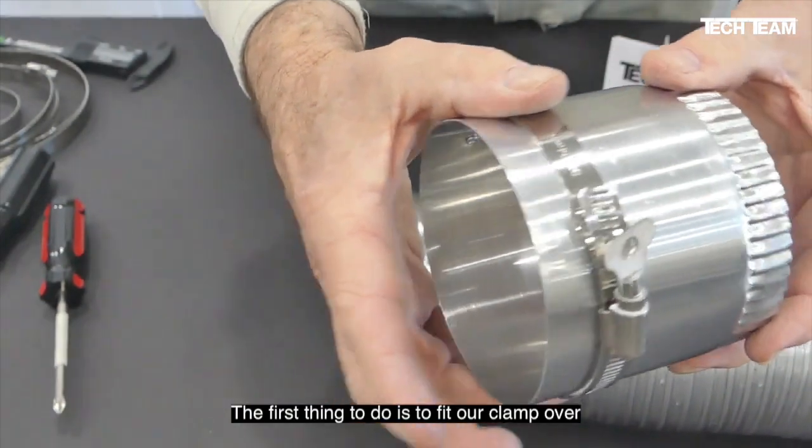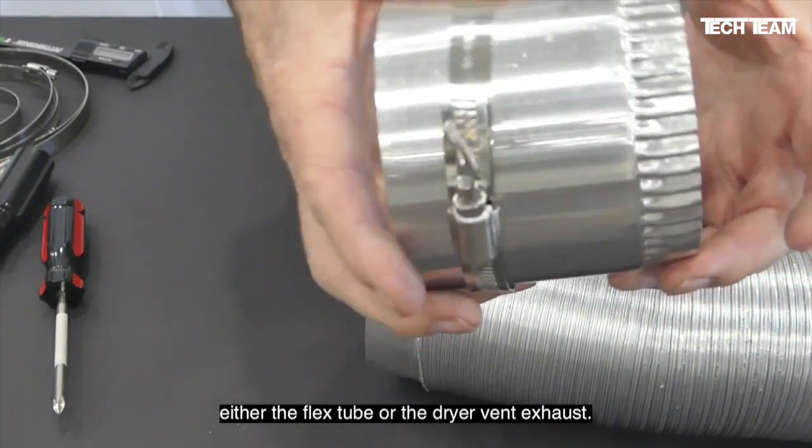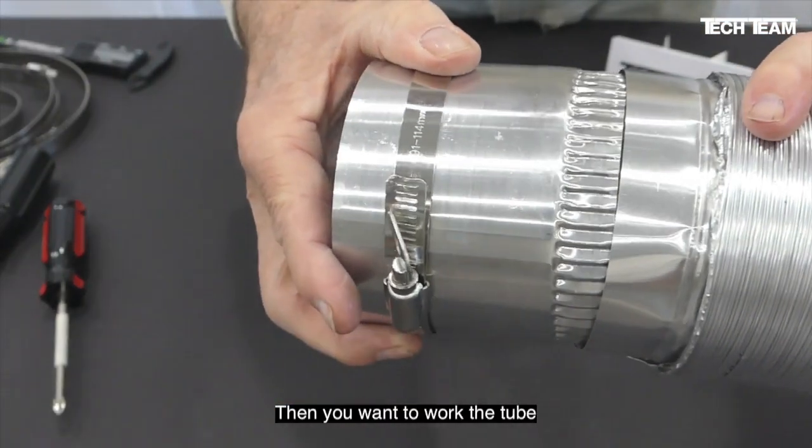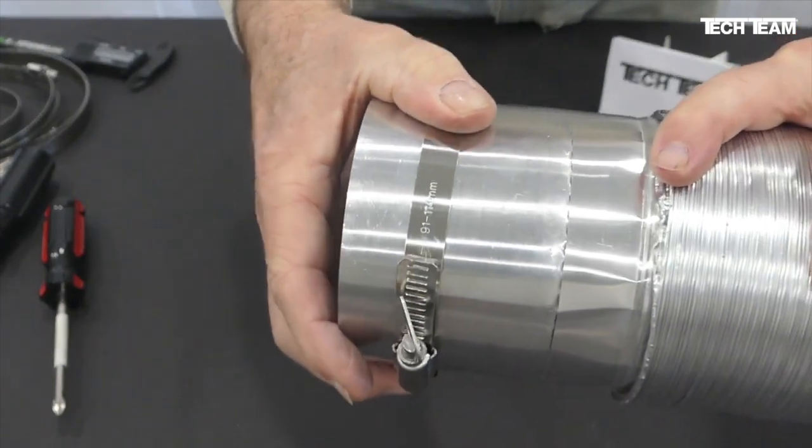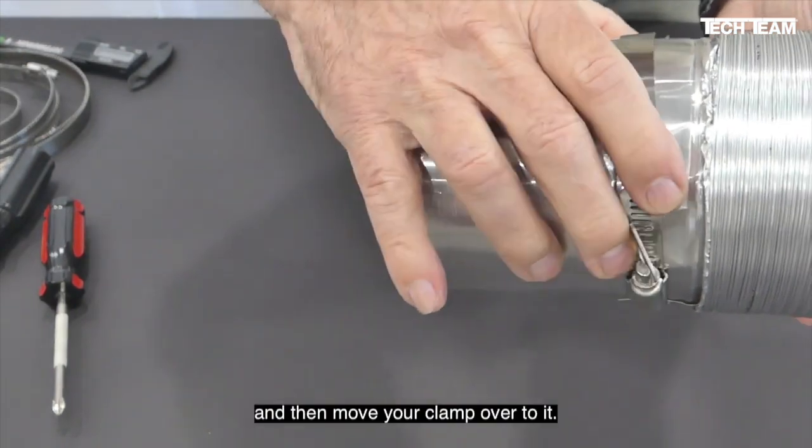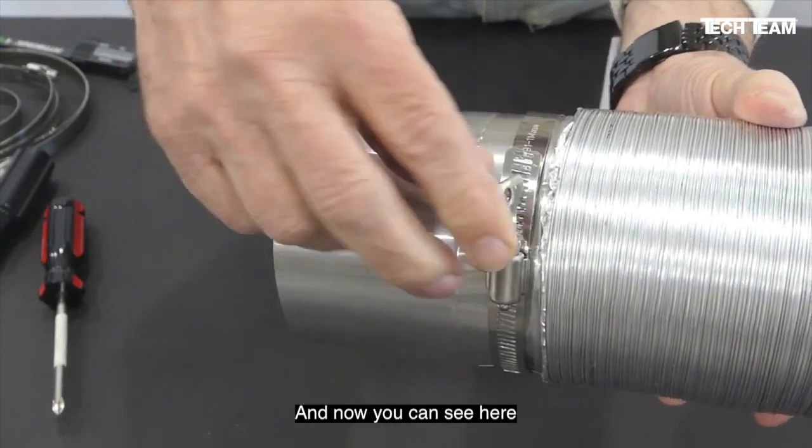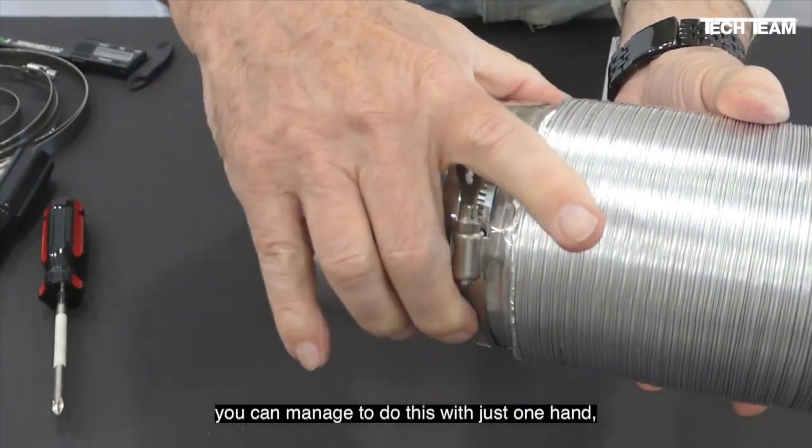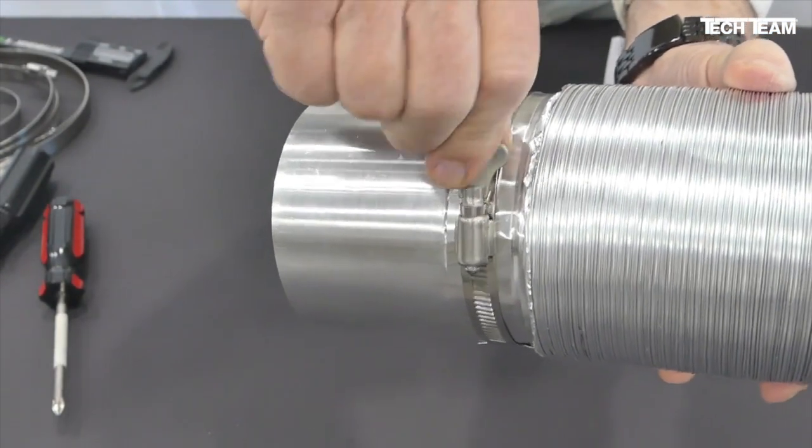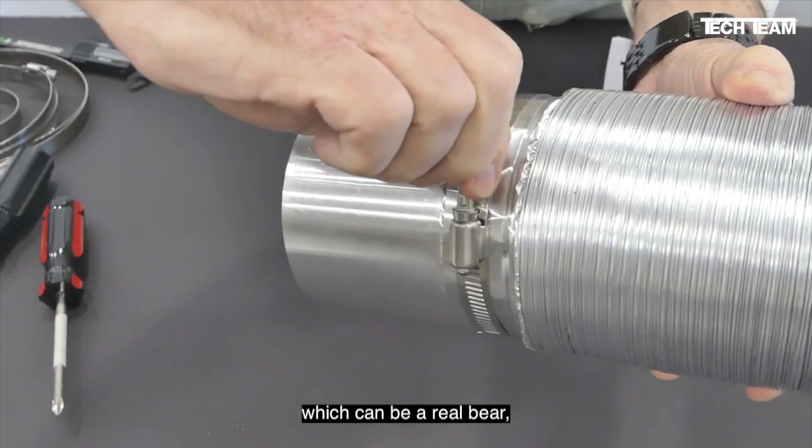The first thing to do is to fit our clamp over either the flex tube or the dryer vent exhaust. Then you want to work the tube over the dryer vent exhaust and then move your clamp over to it. And now you can see here, you can manage to do this with just one hand, as opposed to having to get in there with a screwdriver or something else and try to tighten this, which can be a real bear.